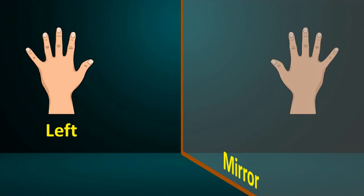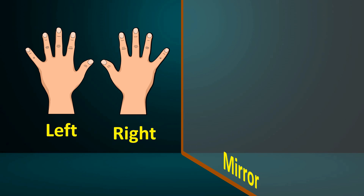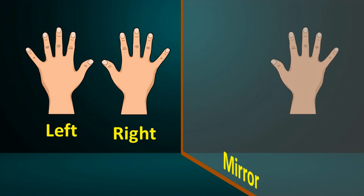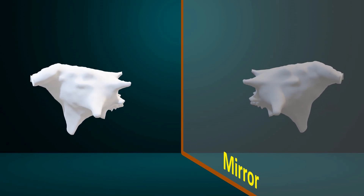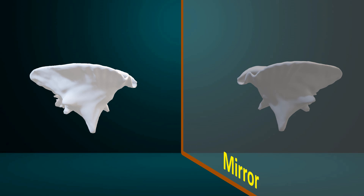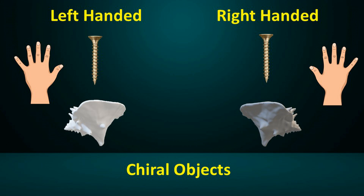Another interesting point to note is that the mirror image of your left hand is identical to your right hand. In other words, your right hand is the mirror image of your left hand. Based on this property, when an object and its mirror image are different, we classify one as left-handed and the other as right-handed. For example, the mirror image of a left-handed conch shell is a right-handed conch shell. Similarly, the mirror image of a left-handed screw is a right-handed screw. In chiral objects, one form is referred to as left-handed, while its mirror image is referred to as right-handed.